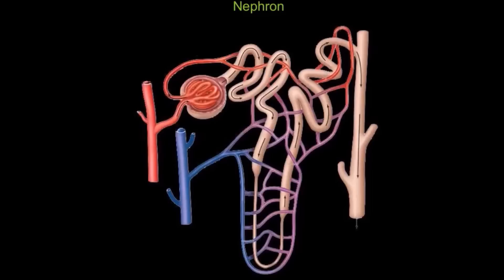Before we begin identifying the parts of the nephron, we need to identify the parts of the cardiovascular system that are associated with the nephron. Recall from the cardiovascular system chapter that arteries are defined as blood vessels that carry blood away from the heart, and veins are blood vessels that carry blood to the heart. 99% of the time we associate arteries with oxygen-rich blood and veins with oxygen-poor blood.